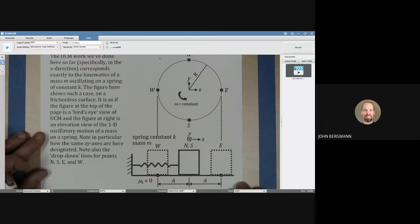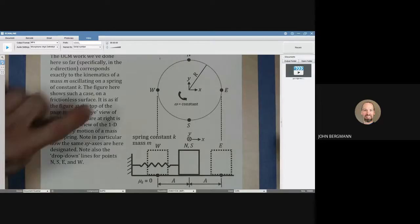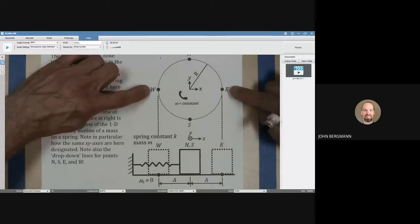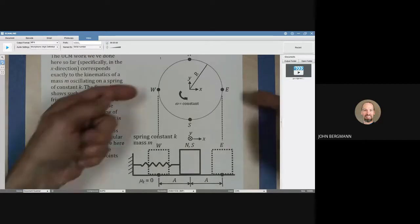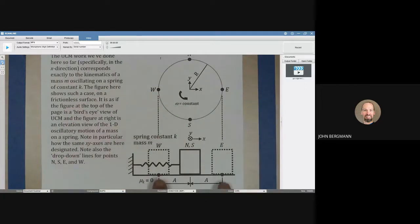And when we were talking about circular motion, we noted that at points west and east, the accelerations were a maximum. And if we drop those down to the mass on the spring, the accelerations of the mass are a maximum at point east and point west.